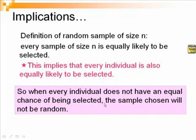So how can we use the result to help us solve problems? When every individual does not have an equal chance of being selected, it will imply that every sample will not have an equal chance of being selected, and therefore it will imply that the sample chosen is not random.